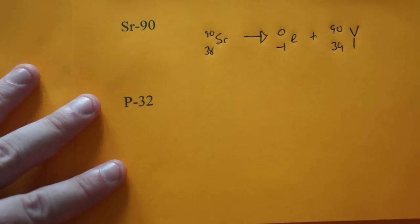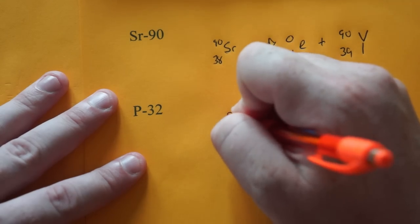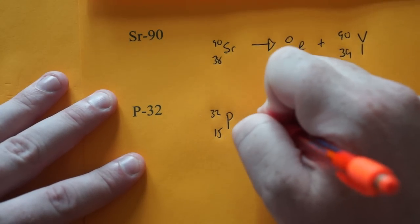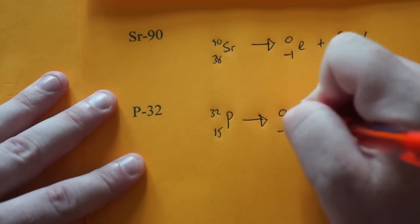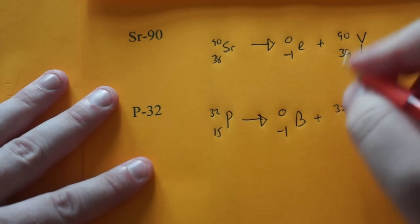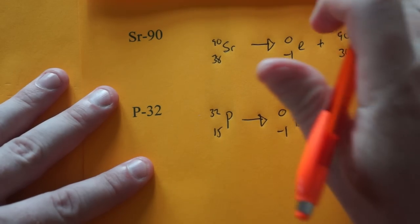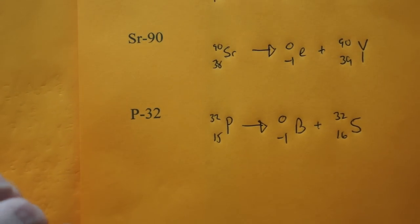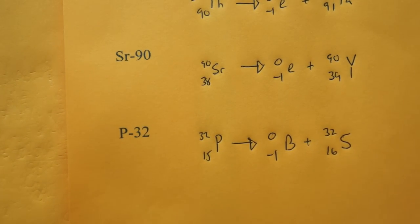And the last one I'm going to do is phosphorus 32. P32. Phosphorus, element number 15. And another beta decay. So I'll put a B there this time. Mass number of the new isotope is 32. Atomic number 16. Which means we just made sulfur 32. And that's how you do the beta decay of certain isotopes.